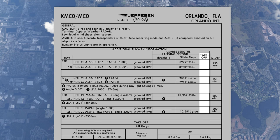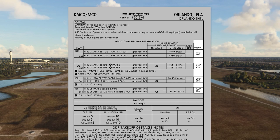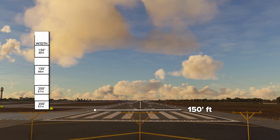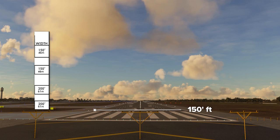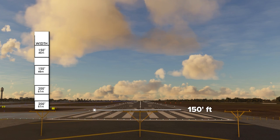Number eight: if there's a physical distance restriction on the runway for takeoff, it will be listed in this section. Number nine is the actual physical width of the runway — in this case at Orlando it's a generous 150 feet.